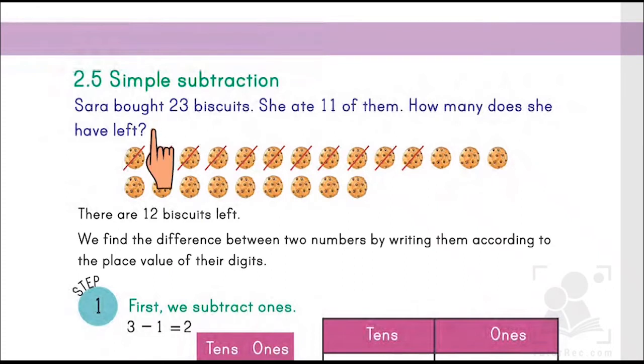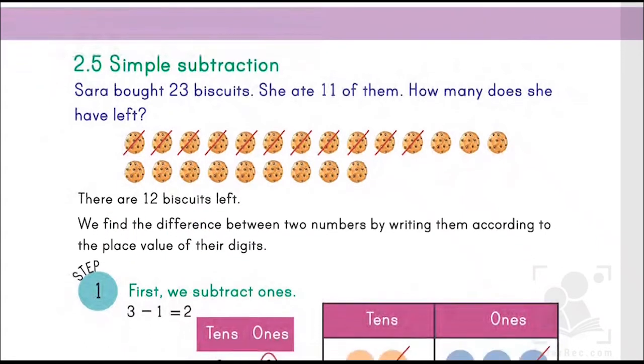Let's count the 11: 1, 2, 3, 4, 5, 6, 7, 8, 9, 10, 11. As you can see kids, these 11 have been cut, so the remaining ones are the ones that have been left with Sara: 1, 2, 3, 4, 5, 6, 7, 8, 9, 10, 11, 12. So when Sara had 23 biscuits and she ate 11 of them, she is left with 12 biscuits only. There are 12 biscuits left.